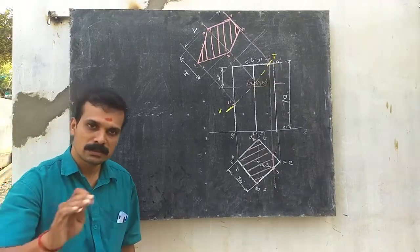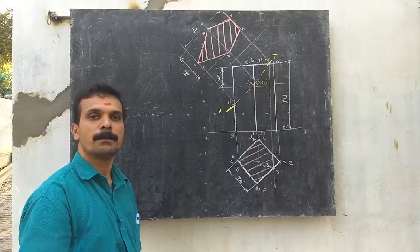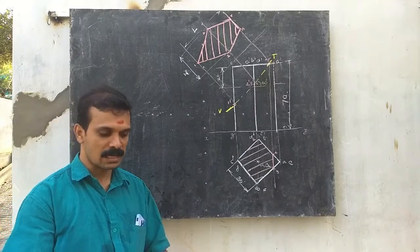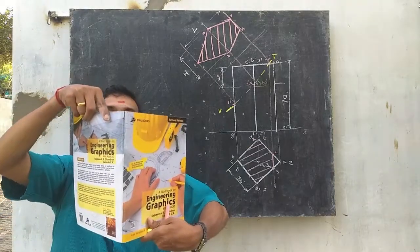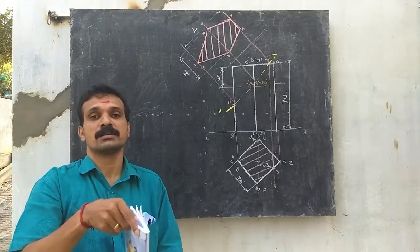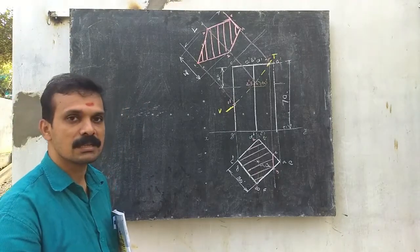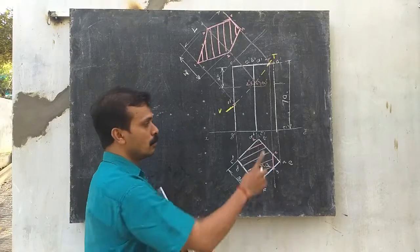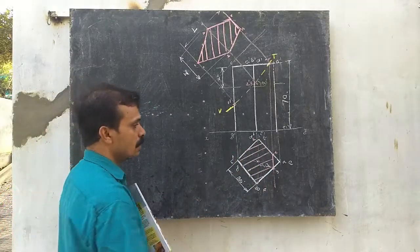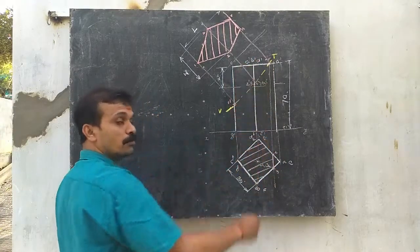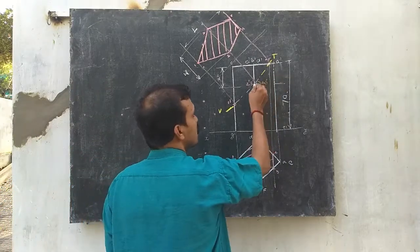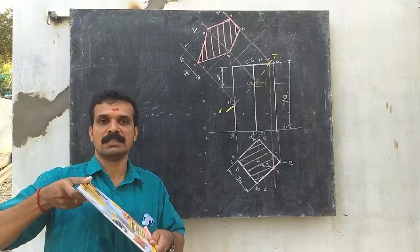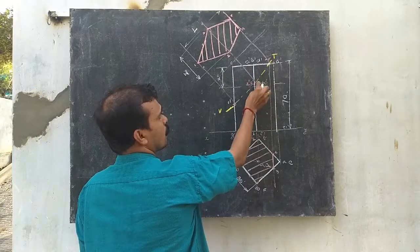To recap: a square prism is placed on HP with two rectangular faces equally inclined to VP — meaning the top view appears as a diamond or rhombus. The diagonal is 30√2, so take 30√2/2 in all four directions to construct it. Label it ABCD and EFGH and draw the front view. The section plane meets the axis 20 mm from the top, inclined at 60 degrees to HP and perpendicular to VP, so draw that line in the front view.